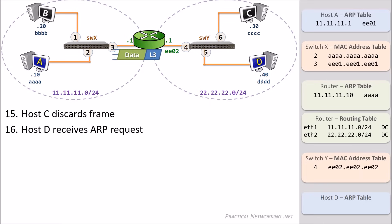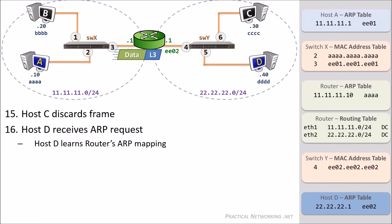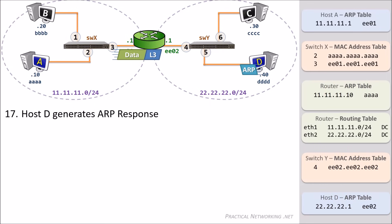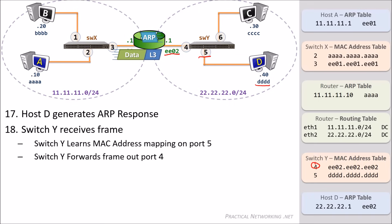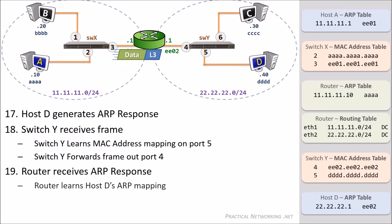When Host D receives the ARP request, it'll take a look and realize that the request is for its own IP address. Therefore, it'll accept and process the ARP request. Host D will start by adding the router's ARP mapping to its ARP table — that the IP address 22.22.22.1 correlates to the MAC address EEE02. Host D will then generate an ARP response and, since it knows the router's MAC address, can send the response unicast directly to the router. SwitchY will receive the ARP response on port 5 and will learn that the device on port 5 owns the MAC address DDDD. Since the ARP response was sent unicast to the router with a destination MAC address of EEE02, the switch will look up its MAC address table and determine that the frame must be forwarded out port 4.